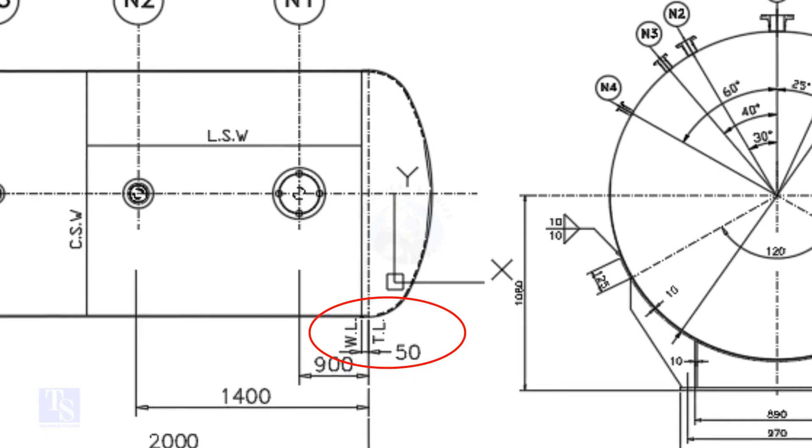What is TL and WL? TL stands for tan line and WL stands for weld line. The surface between the TL and the WL is called SF or straight face. Here, the straight face is 50 millimeters.